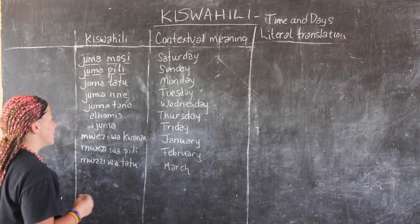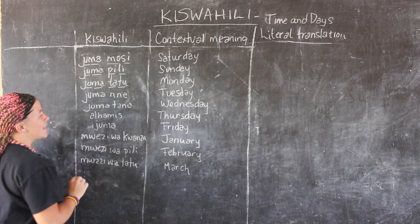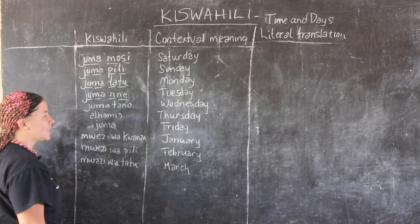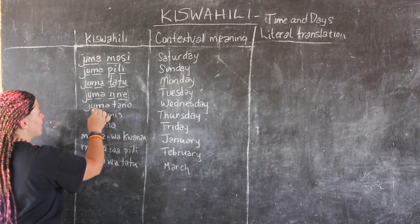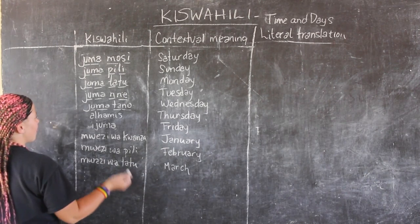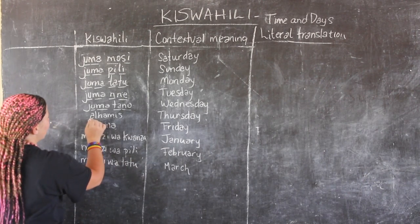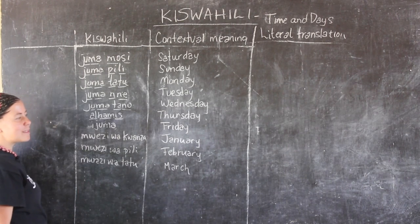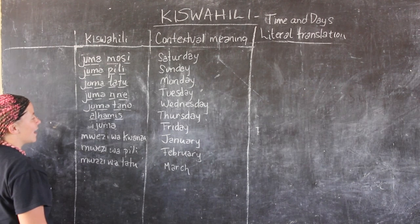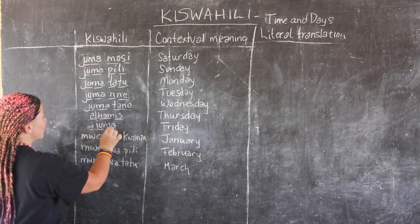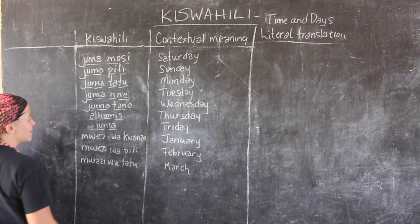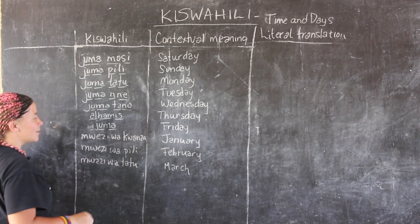Jumatatu is Monday. Jumanne is Tuesday. Jumatano is Wednesday. Alhamisi is Thursday — it's an Arabic word meaning Thursday. And Ijumaa is Friday, with emphasis on the 'ju.'